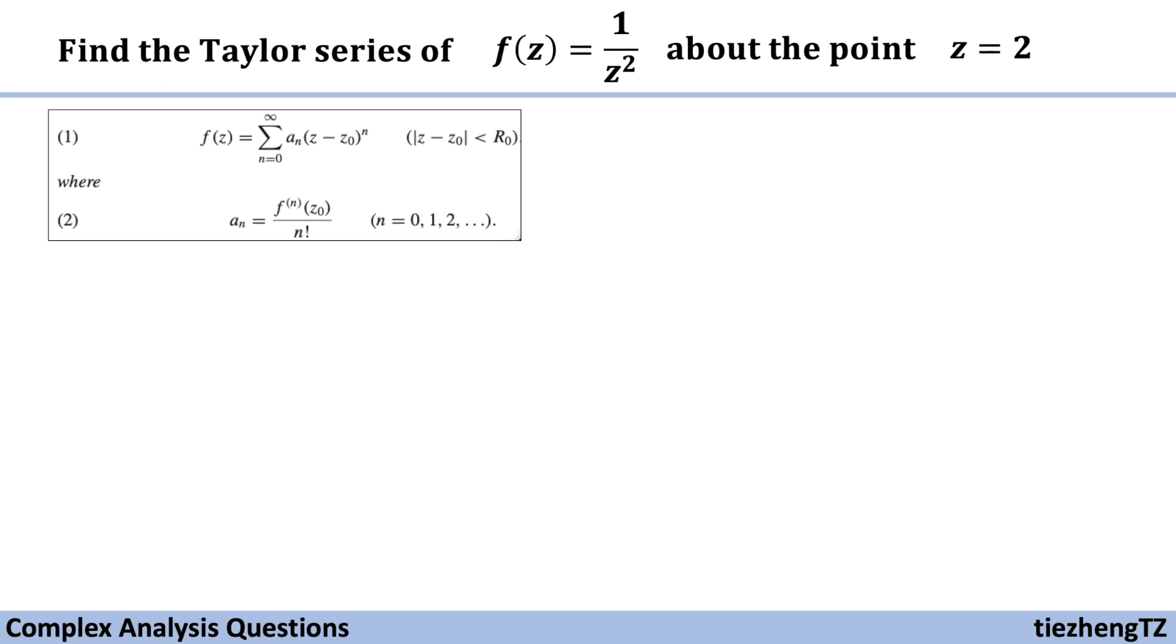Likewise, we already know the general form of the Taylor series from the textbook, and the question becomes how to find the general form of the nth derivative of f(z). First, we need to write down a few first terms of the nth derivative to see if we can get the general form of this function.